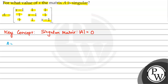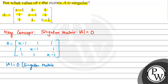So, A is equal to: x minus 1, 1, 1; 1, x minus 1, 1; 1, 1, x minus 1. The determinant of A should be equal to 0 for a singular matrix. So this implies the determinant of A is equal to 0.